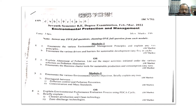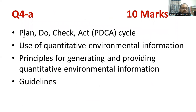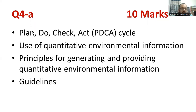Question 4a: explain the environmental performance evaluation process using the PDCA cycle. It is better to elaborate what the PDCA cycle is. The examiner expects the candidate to elaborate PDCA. The PDCA cycle is nothing but plan, do, check, and act. How you relate it to the environment is very important. You need to elaborate what plan, do, check, act means — planning, organizing, controlling, directing — those management principles applied to generating and providing quantitative environmental information, guidelines, and policies.